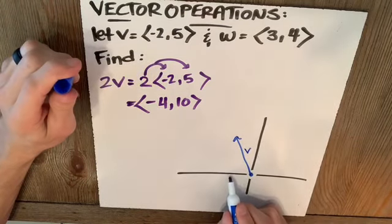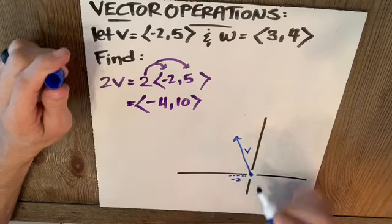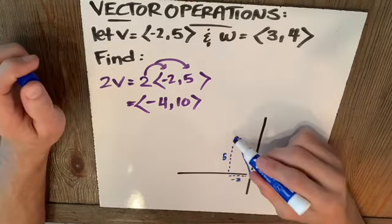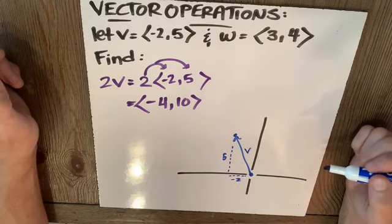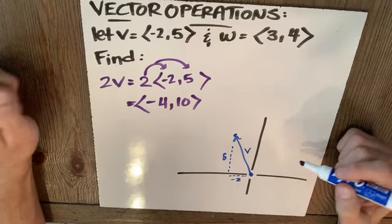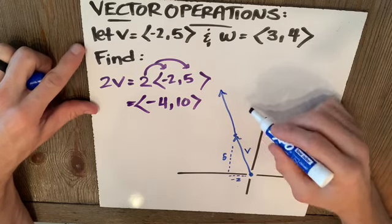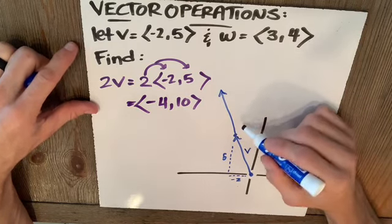Notice this was negative 2 and this was 5. So I knew that was a terminal point in quadrant 2. Take a look at what we did. We doubled it. So I doubled V. So here, this big long vector is 2V.